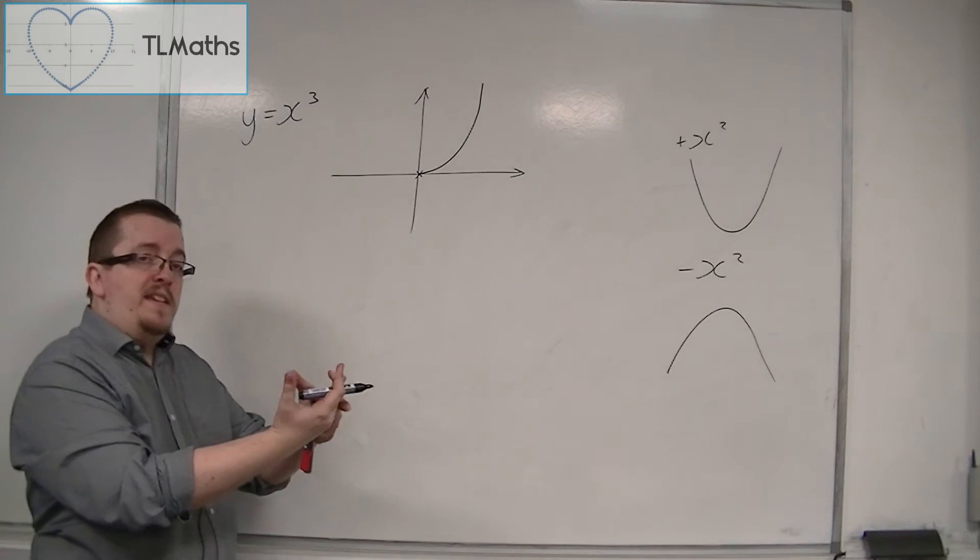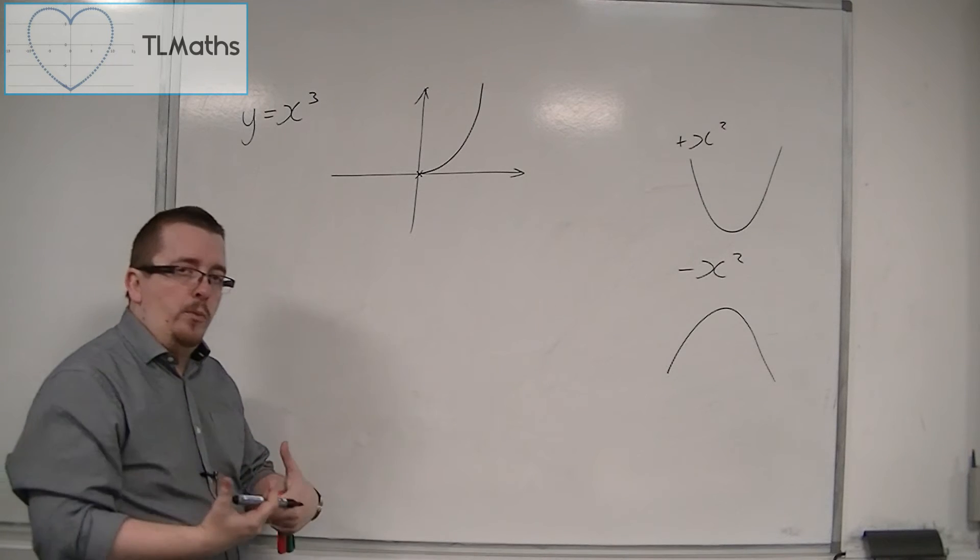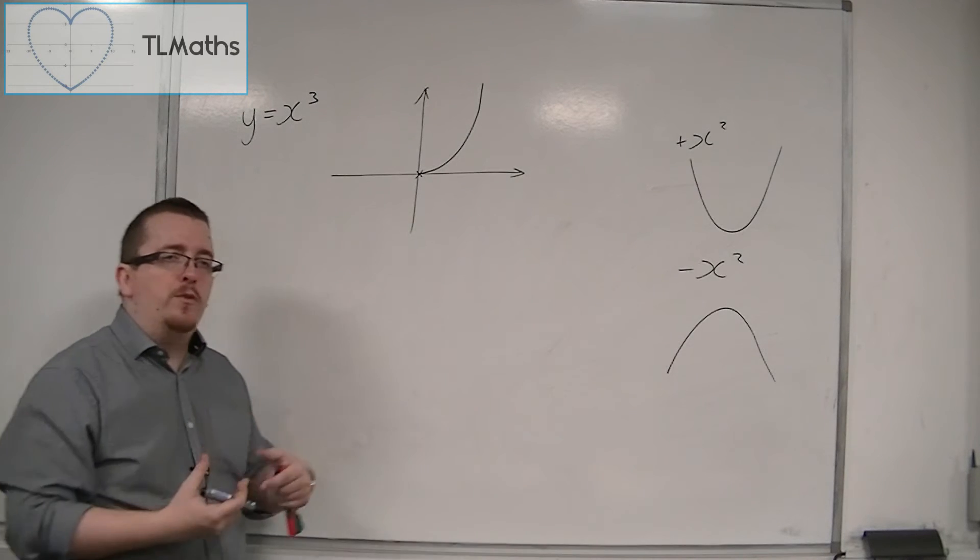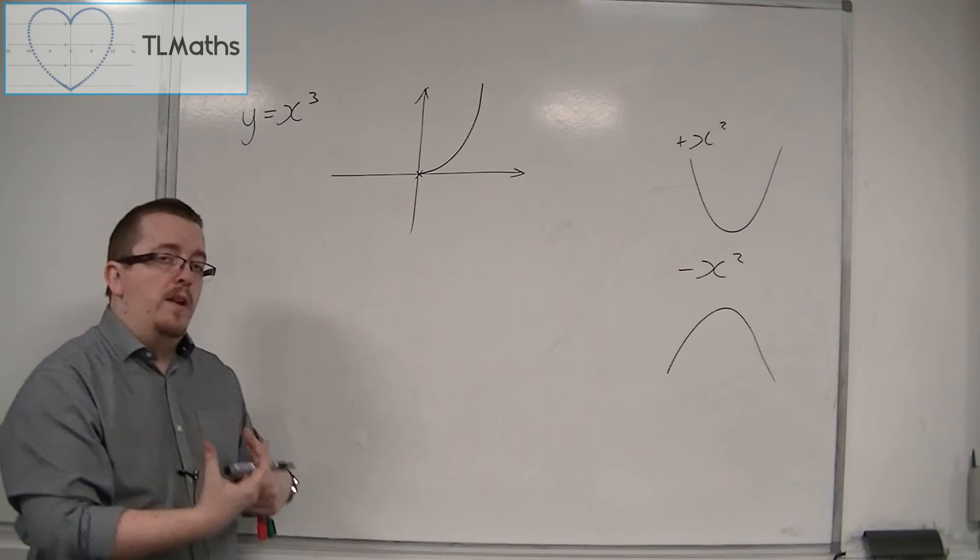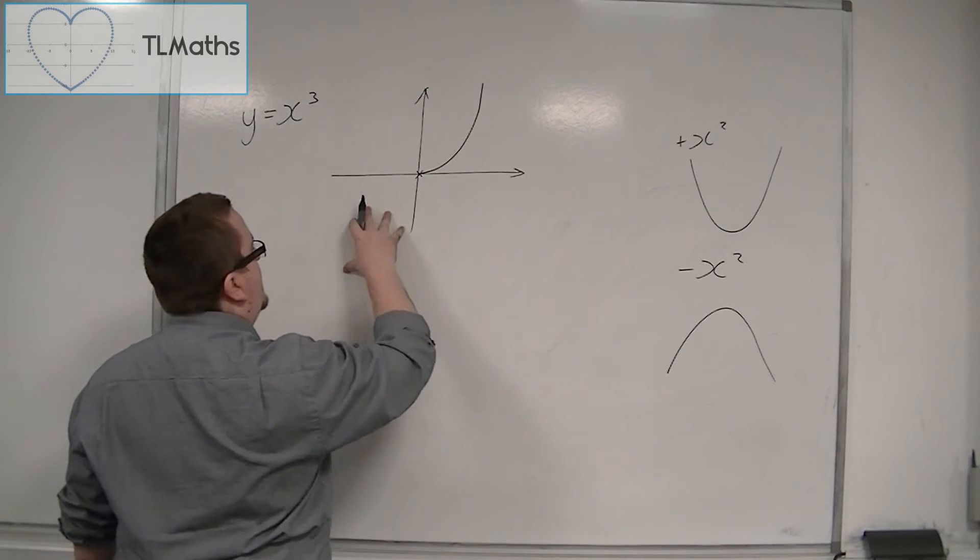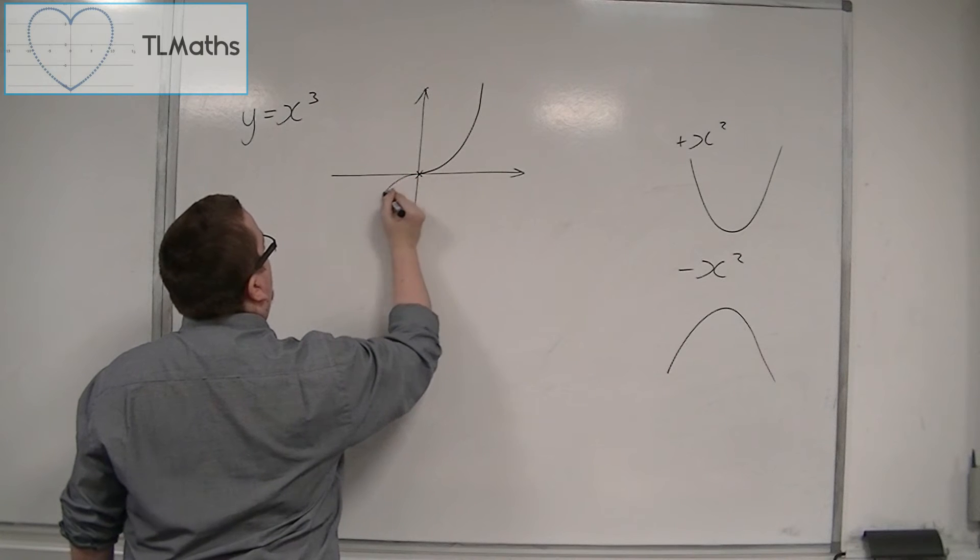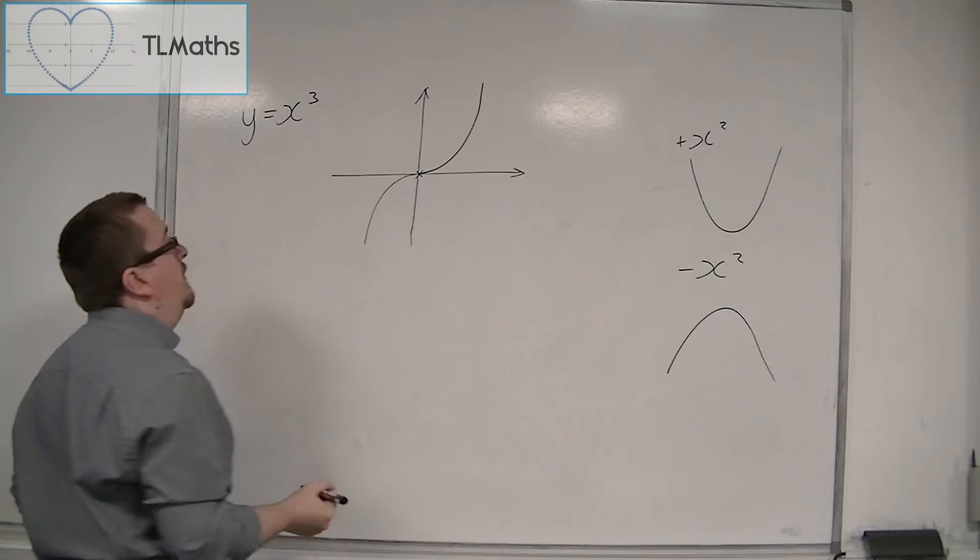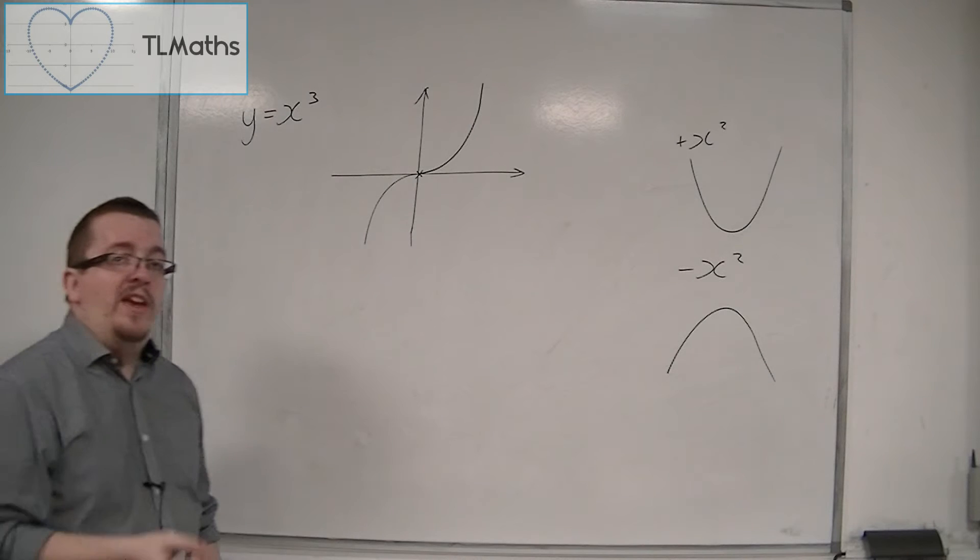And when you get into the negative x's, you get minus 1 cubed and minus 2 cubed and minus 3 cubed. So you're going to get minus 1, minus 8 and minus 27. And so it's down in the negative range. The curve does look something like this. This is y equals x cubed.